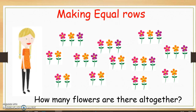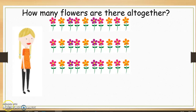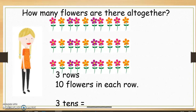Now let's look at how we can make equal rows as a way to solve multiplication problems. Hannah wants to know how many flowers are there all together in her garden. However, it is very hard to work it out when the flowers are scattered throughout the garden like this. She could count each flower, but that will take quite a long time. Let's look at how we can make equal rows and use multiplication to solve this problem. Hannah has put the flowers in rows. There are three rows all together, and there are ten flowers in each row. Now we can work out the problem easily by counting in groups of ten: ten, twenty, thirty. So three tens equals thirty.